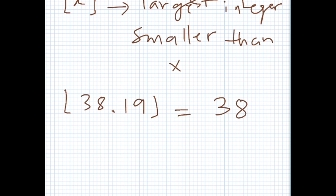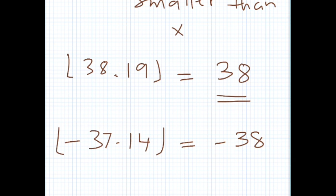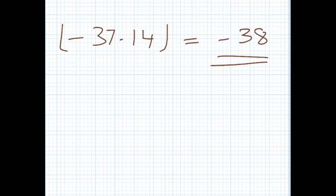What about a negative number like minus 37.14? The floor of that is minus 38, because it's the largest integer which is smaller than this value. The purpose of this video is to work with examples involving the floor function and explore different ways we can manipulate and prove expressions.